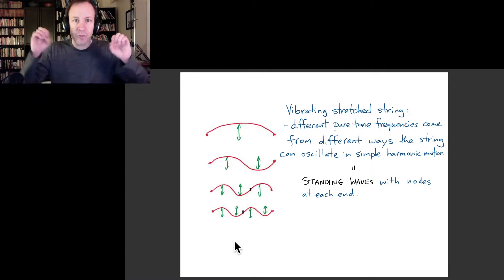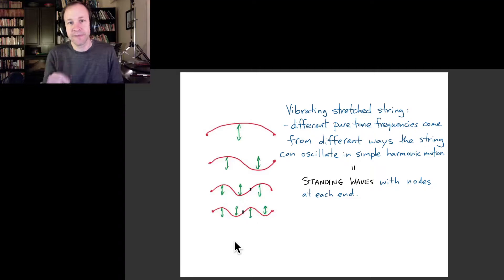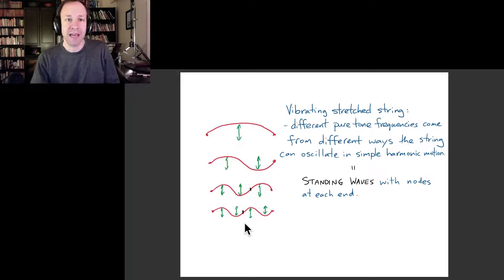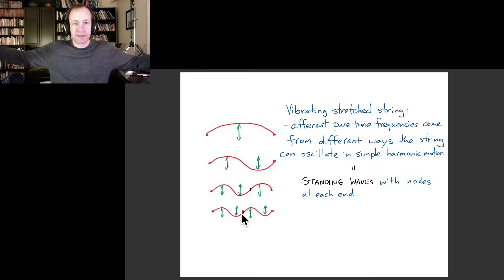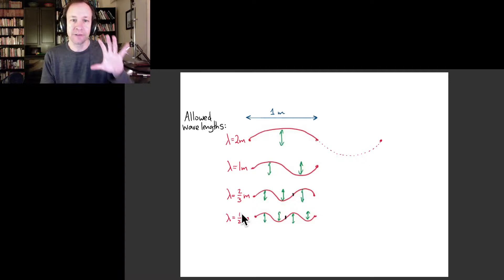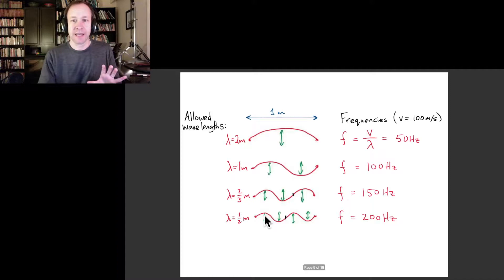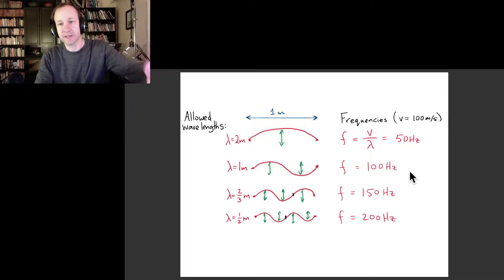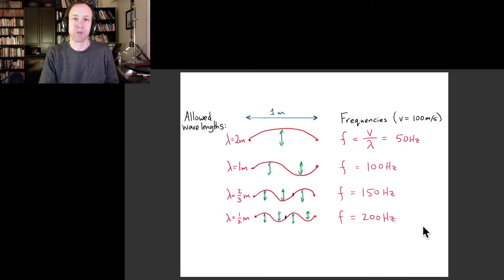When you have a vibrating stretched string there are only certain specific ways that it can vibrate in simple harmonic motion. These correspond to what we call standing waves on the string, and you see different patterns that are constrained by the fact that the two ends have to be fixed. So that means there are only certain wavelengths of these standing waves allowed, and if you work out the frequencies corresponding to those wavelengths, that turns into a series of frequencies that are multiples of the lowest one — in this case 50 Hz, so 100 Hz, then 150, then 200.